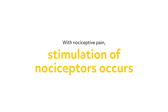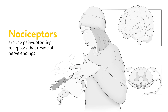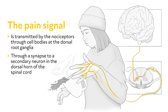With nociceptive pain, stimulation of nociceptors occurs. Nociceptors are the pain-detecting receptors that reside in nerve endings. The pain signal is transmitted by the nociceptors through the cell bodies at the dorsal root ganglia and through a synapse to a secondary neuron in the dorsal horn of the spinal cord and, finally, onto the sensory cortex of the brain.